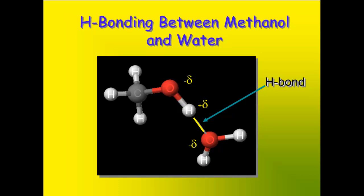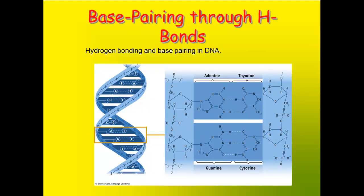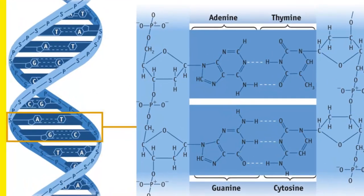Here's an example of water hydrogen bonding with an alcohol molecule. We can see the hydrogen that is covalently bonded to the oxygen on the alcohol molecule is electrostatically attracted to the oxygen on a water molecule. Here's an example of water hydrogen bonding with an ammonia molecule — the hydrogen of the water molecule is electrostatically attracted to the nitrogen of the ammonia molecule. Here's another example of hydrogen bonding in a DNA molecule. Notice the hydrogen bonding between the nitrogen and the hydrogen, and the oxygen and the hydrogen.